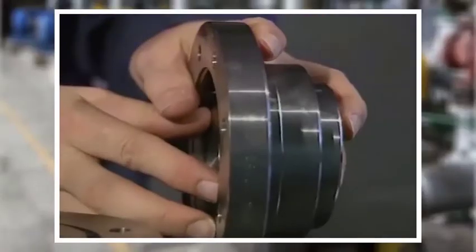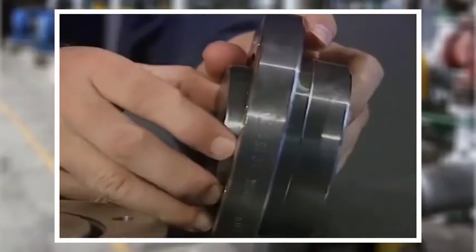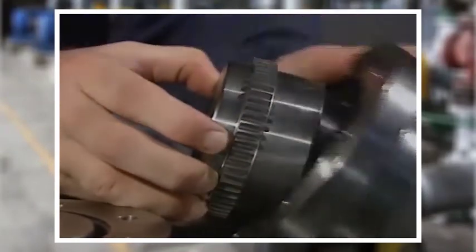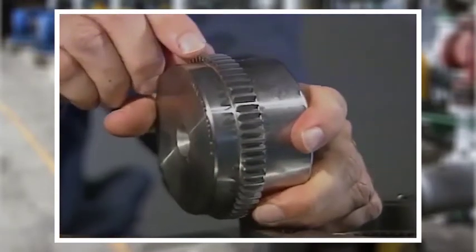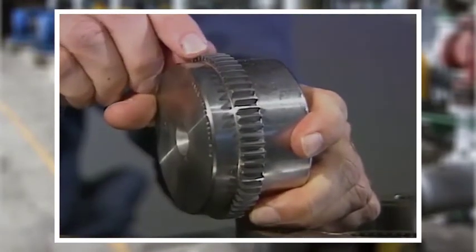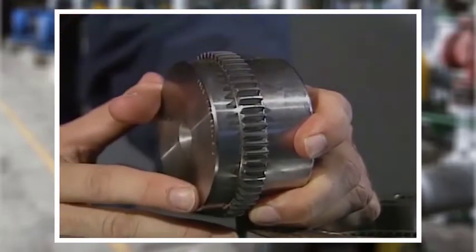Many gear couplings allow one full degree of misalignment. To allow for greater misalignment, some manufacturers curve the teeth. Depending upon the curvature, as much as three degrees of angular misalignment are possible.